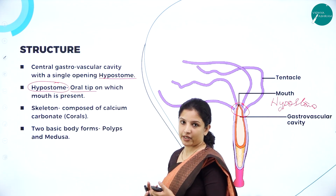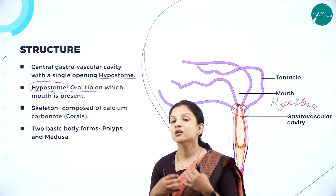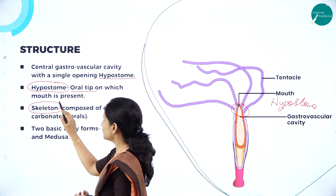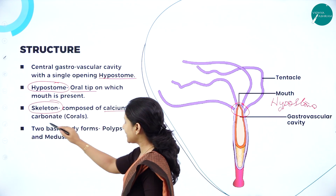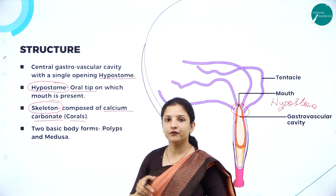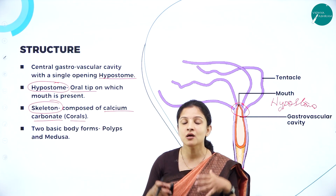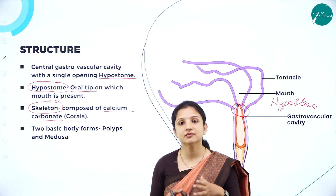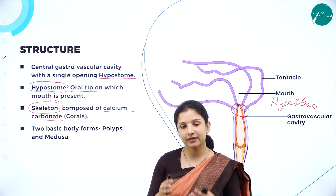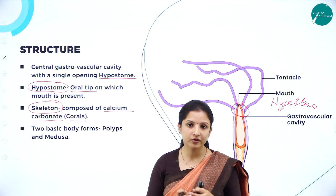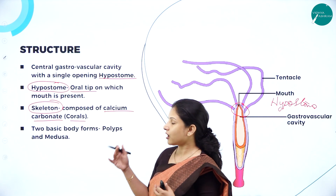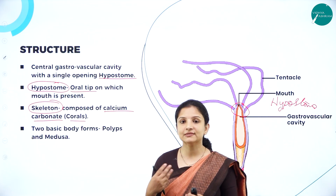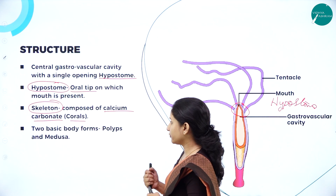What is this skeleton made up of? They need a particular shape or structure, so they have a framework called the skeleton. The skeleton is composed of calcium carbonate, especially in corals. You may have heard about the Great Barrier Reef, which has the largest coral collection in the world. Those corals have a hard covering made up of calcium carbonate — also called a calcareous covering.